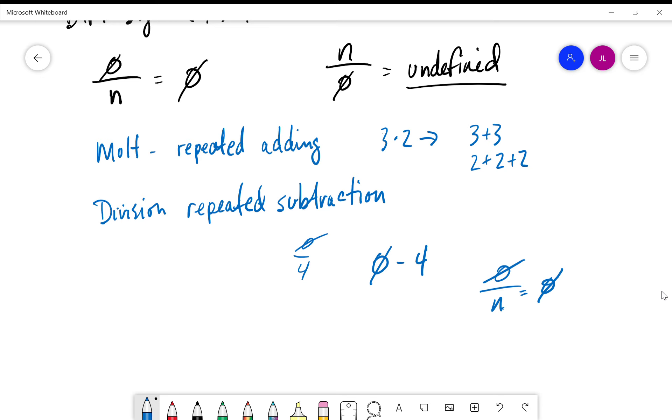However, the difference comes when you see a number over zero. In this case, since division is repeated subtraction, we look at this and basically say: how many times can we take zero away from any number?